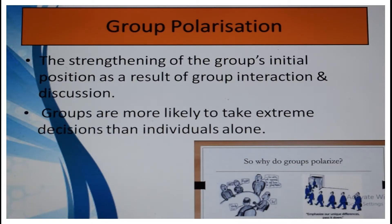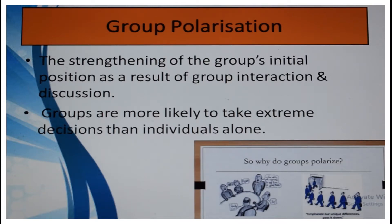As a result of group interaction, our position gets strengthened, because the group is discussing and giving opinions in favor of a particular thing. Since the group is also supporting that view, it feels like we are thinking correctly too. So groups are more likely to take extreme decisions, because individuals cannot take such extreme decisions on their own.